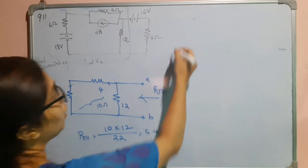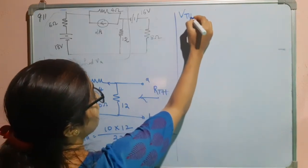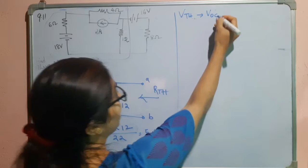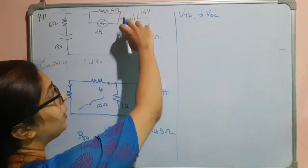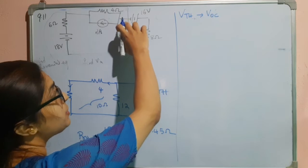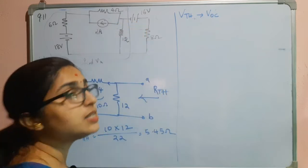Next, we have to find out the Thevenin's voltage that is VTH which is nothing but the open circuit voltage. How are we going to do that? Again, these terminals will be made open and we have to find the voltage across this particular 12 ohm resistance.